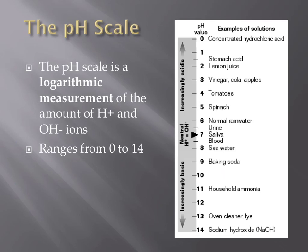pH is a logarithmic measurement of the concentration of hydronium and hydroxide ions. This means that if the pH value of a substance changes by 1, the relative concentration of hydronium or hydroxide ions changes by a factor of 10. The pH scale is used because of the drastic differences in concentration of these ions across the scale. Other examples of logarithmic measurements include the Richter scale for earthquakes and the decibel scale for sound. There is a separate video that describes the mathematics of acids, bases, and the pH scale.